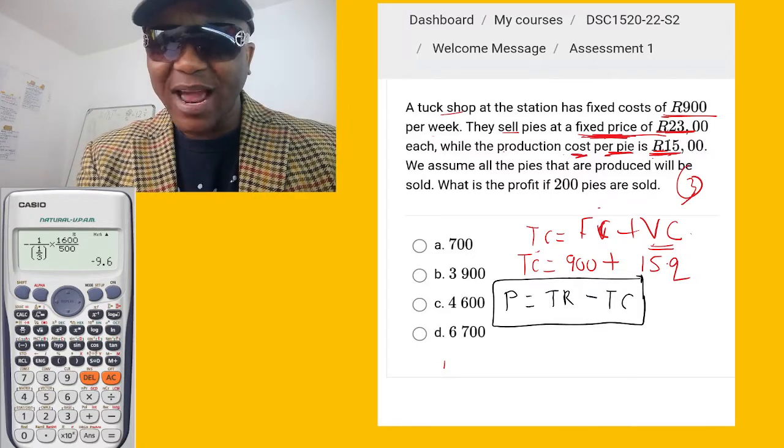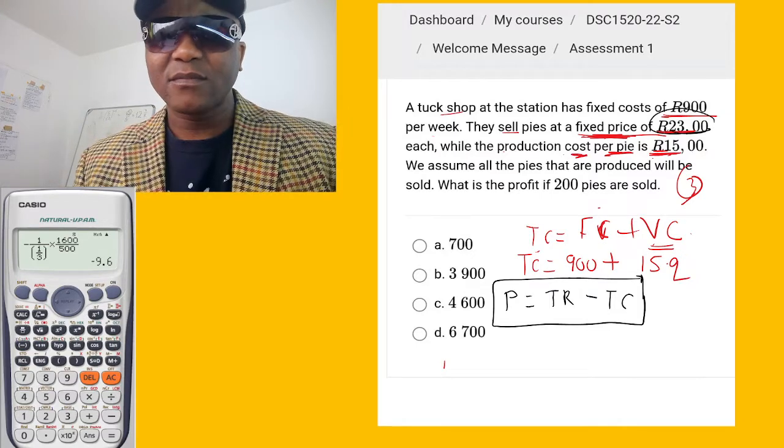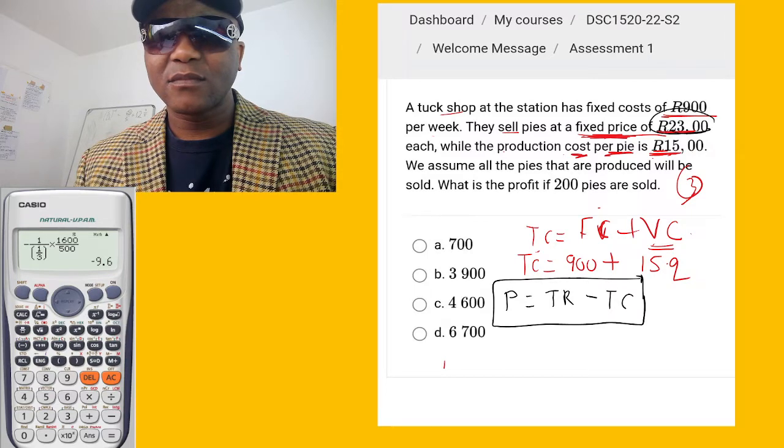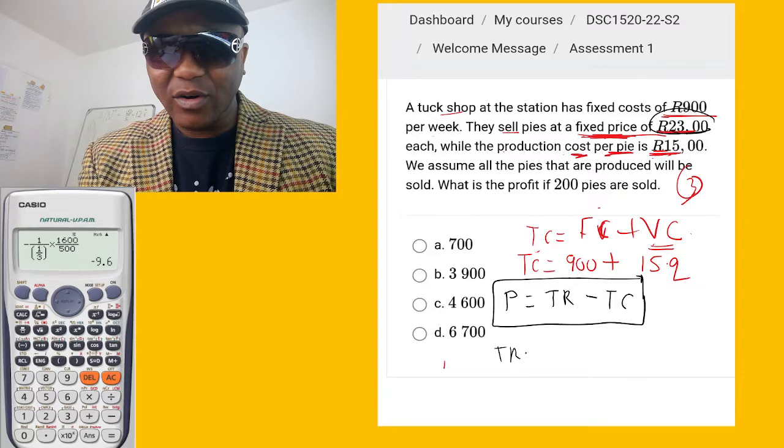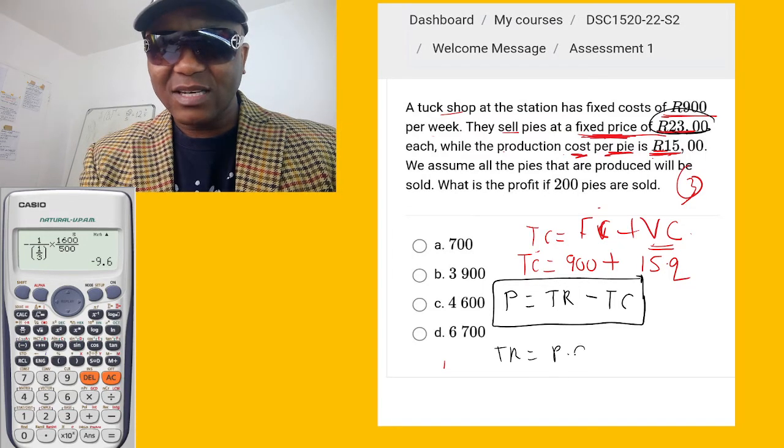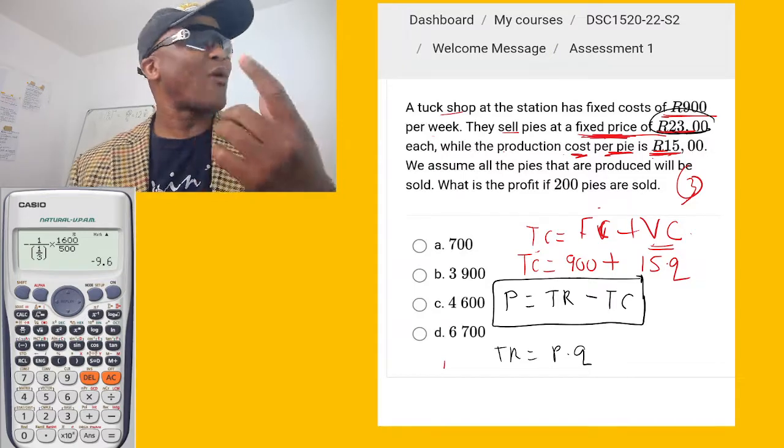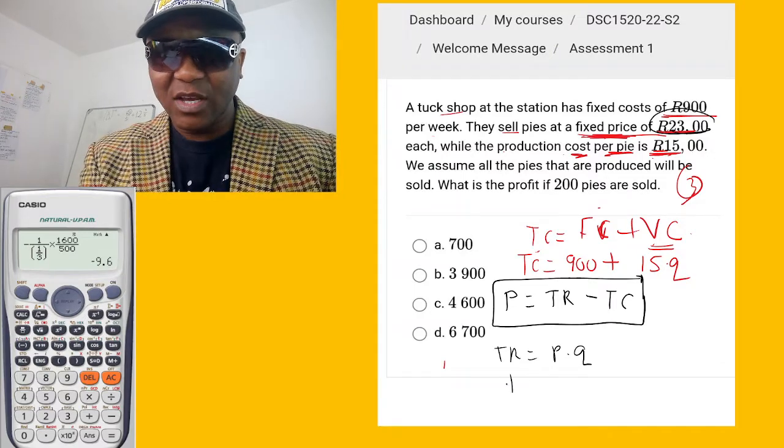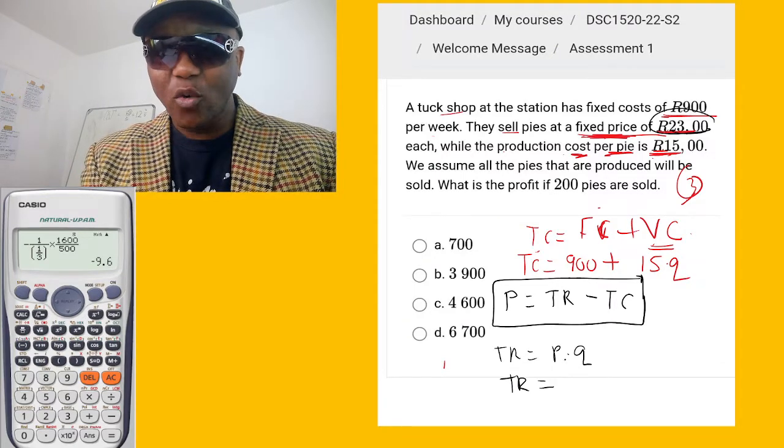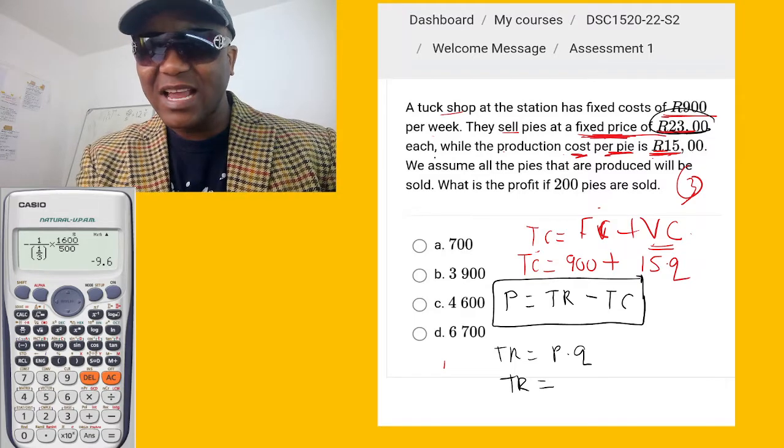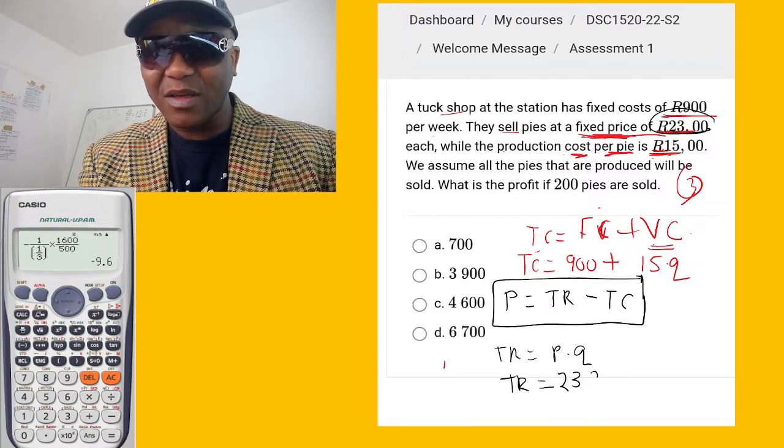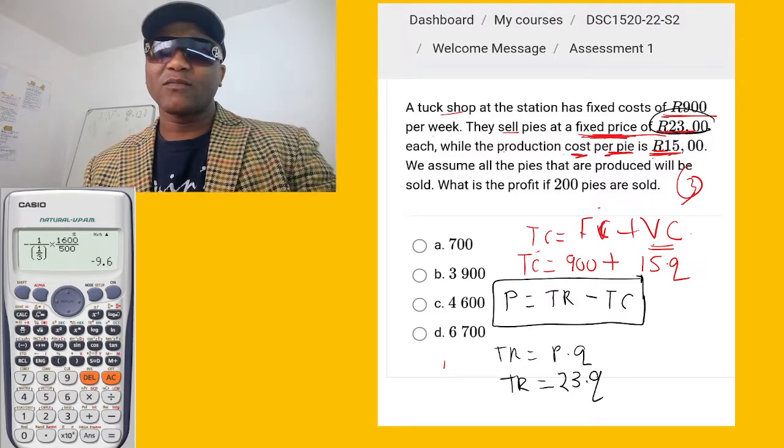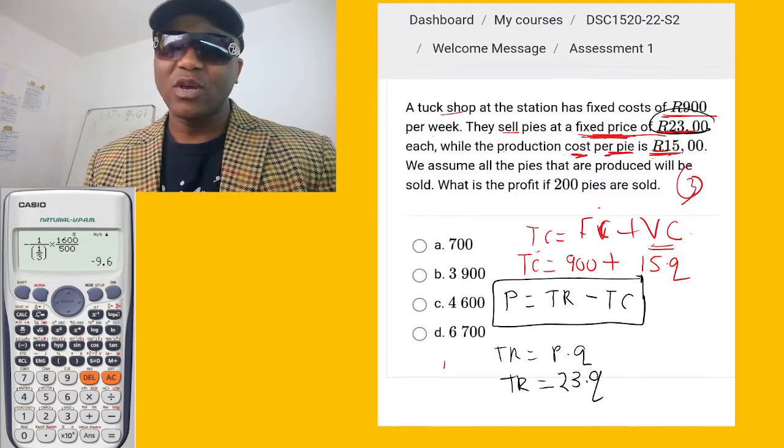So what is revenue? The revenue, you take your price times quantity. Price of each times quantity. Total revenue equals what is the price? They say the price is 23 for each. So 23, but we don't know the quantity. Let's just say 23 times Q. So that's the total revenue.